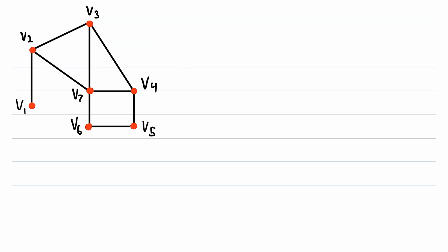All right, so here is our beautiful graph. I've labeled the vertices v1 through v7. So what is a cycle and what's an example of a cycle in this graph?